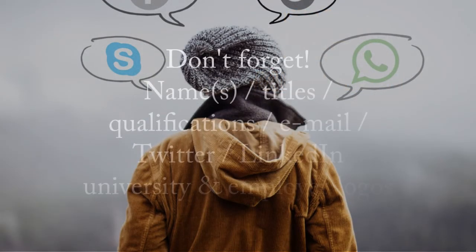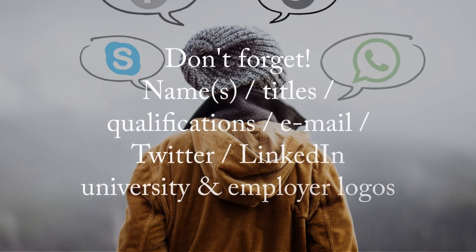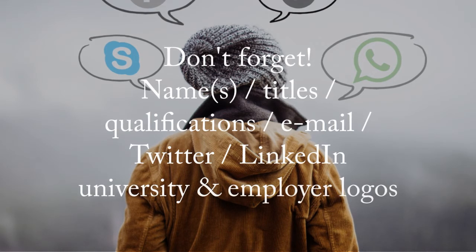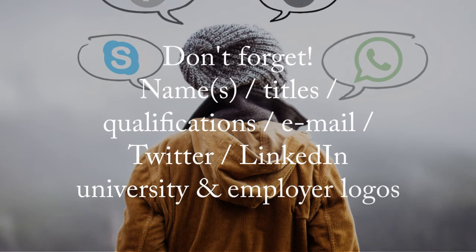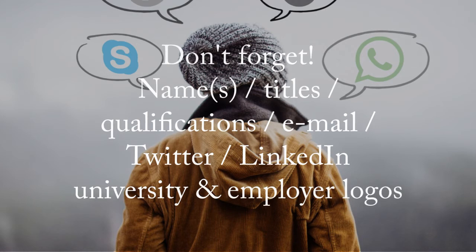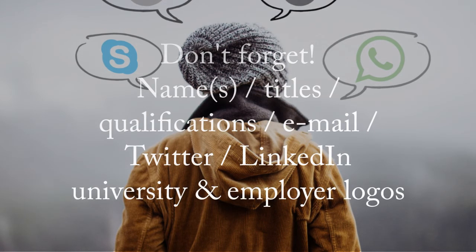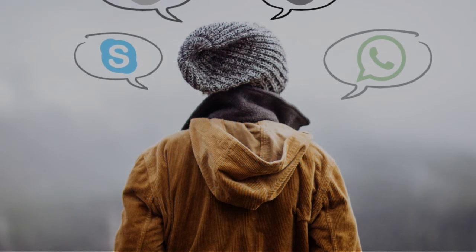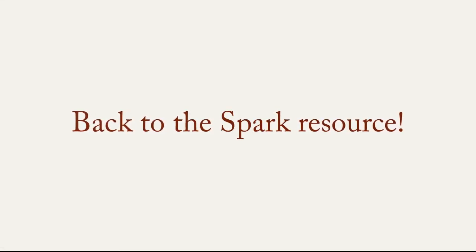For the final set of tips: put your name on your poster and make sure that everyone is included if it's a group of you. You may have to put your name, your job title, and even your student or studies title — show that you're affiliated to particular universities and the work you're doing. You may need your qualifications, but put contact details as well, such as email, Twitter, and the logos from your employer and place of study. Thanks for listening. There are a few more resources back on the Spark page.